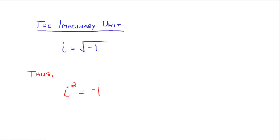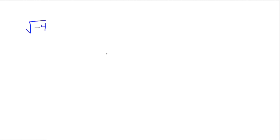Let's look at some examples of how to use the imaginary unit. Suppose we have the square root of negative 4. That's not a real number, because there's no real number we can square to get negative 4. But we can rewrite this as the square root of 4 times the square root of negative 1. The square root of 4 is just 2, and the square root of negative 1 is i. So the square root of negative 4 is just 2i.